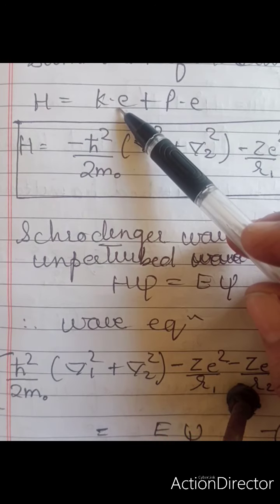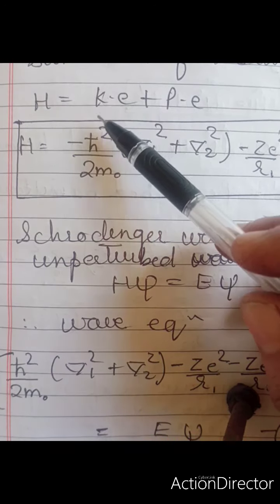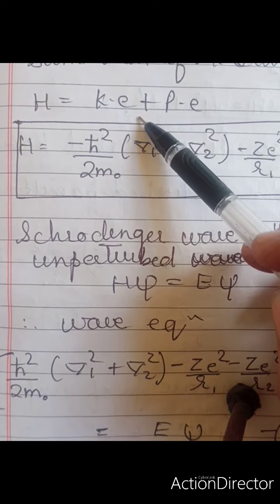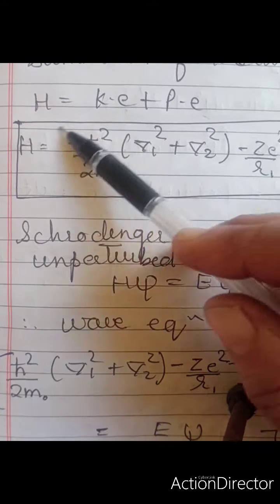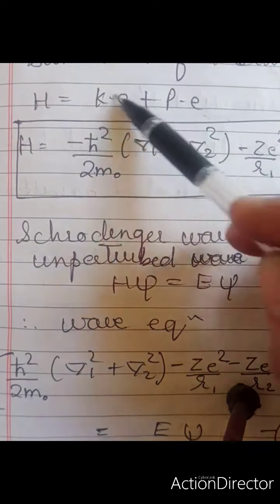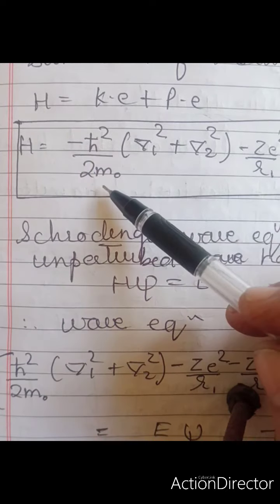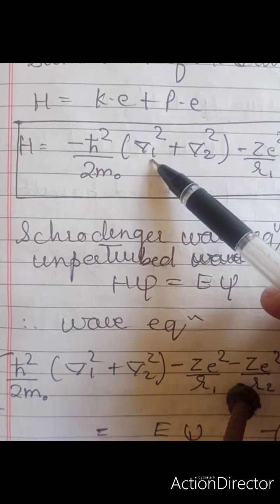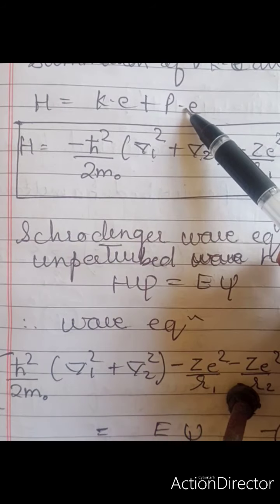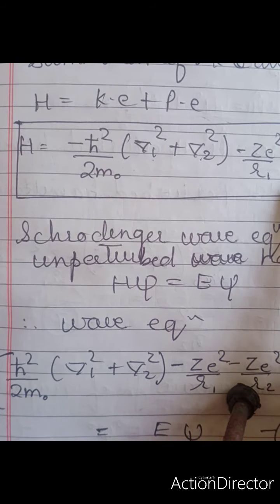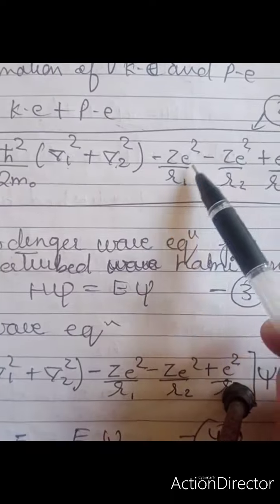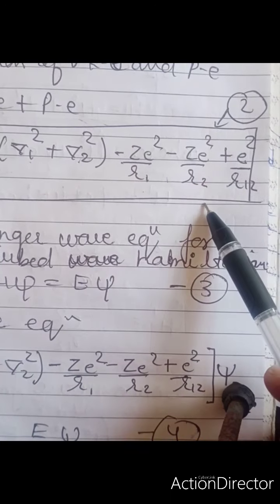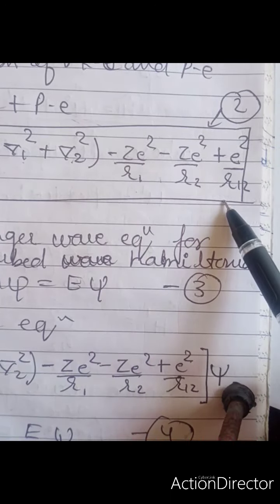The Hamiltonian of the system is the sum of kinetic and potential energy. The kinetic energy is given by minus ℏ² upon 2m times (∇₁² + ∇₂²). The potential energy we just calculated is minus ZE²/R1 minus ZE²/R2 plus E²/R12.